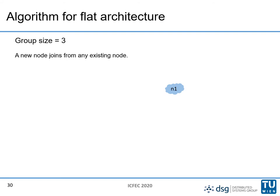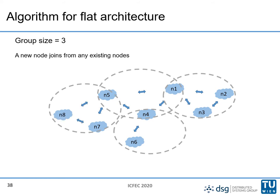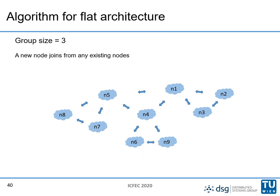For the flat architecture it is similar, but there is no root node and no layers. N1 is the first node, then N2 joins from N1, and N3 also joins, making the first group. N4 can request to join from any node — say it requests from N1 — and a new group is created. N5 joins from N4, and N6 also joins from N4 but creates a new group since there is no room. N7, N8, and N9 are added similarly. The system grows with the same group size, but the hierarchical properties no longer apply.